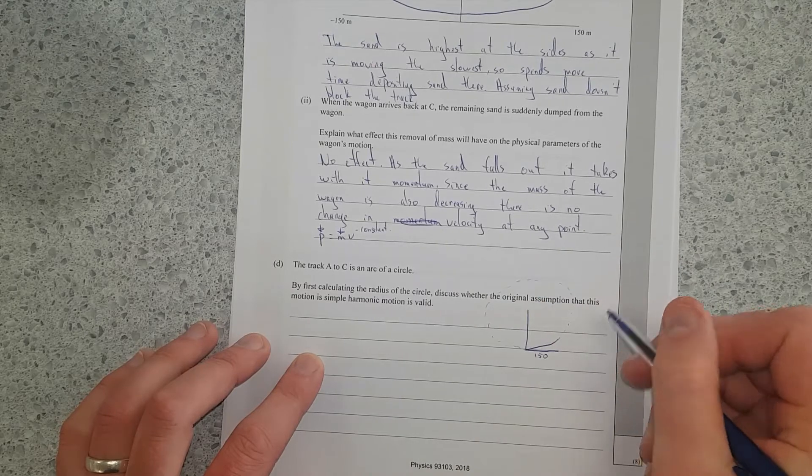Last question. The track A to C is the arc of a circle. By first calculating the radius of the circle, discuss whether the original assumption that this is simple harmonic motion is valid. So what we're going to do is sketch up the situation. So we have here's the base of our track, and this is sort of the slopey thing. This here is 150 metres because it's half of 300. This here should trace out a full circle. We know this height. We haven't found this out yet, but we can find this height out pretty easily. It's just all the kinetic energy turned into gravitational potential energy.